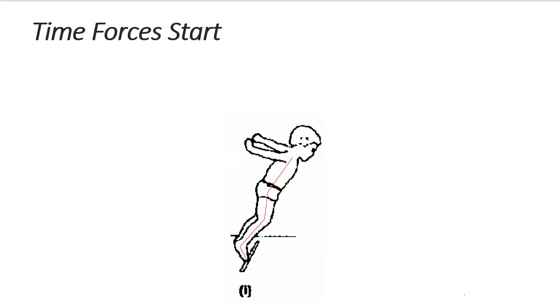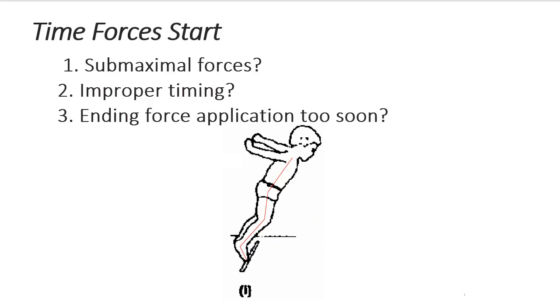Now it's difficult to tell whether the performer's failure to fully extend his hips, knees, and ankle joints prior to takeoff was due to less than maximal force exerted across these joints, poor timing, or ending the application of the forces too soon. So these are types of questions that we should consider while we're creating an evaluation of the performance.